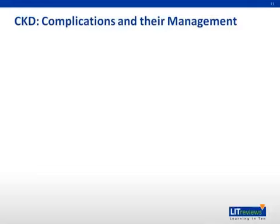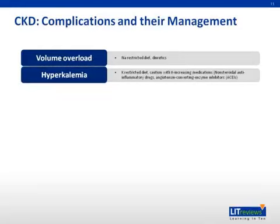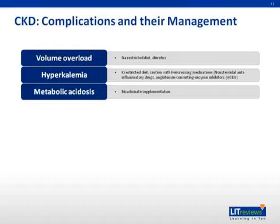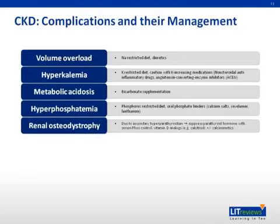CKD is associated with several metabolic complications. Most are more likely to occur during stage 4 CKD, though their pathophysiology often begins in stage 3. Volume overload is usually managed with dietary sodium restriction and diuretic therapy if needed. Hyperkalemia is managed with dietary restriction of potassium and caution with medications that may raise serum potassium, such as ACE inhibitors, angiotensin receptor blockers, and NSAIDs. Metabolic acidosis is initially treated with oral bicarbonate or other base. Hyperphosphatemia is controlled with dietary restriction of phosphorus and phosphate-binding medications. Renal osteodystrophy may occur due to secondary hyperparathyroidism, managed by suppressing parathyroid hormone with control of hyperphosphatemia, activated vitamin D analog therapy, and/or calcimimetic agents.